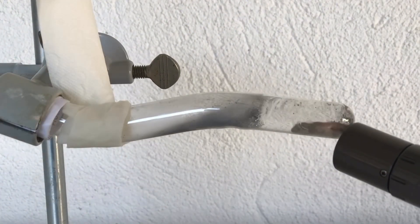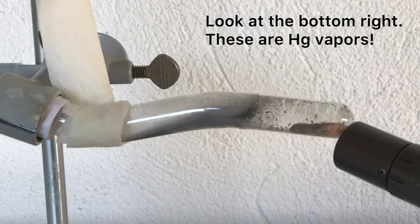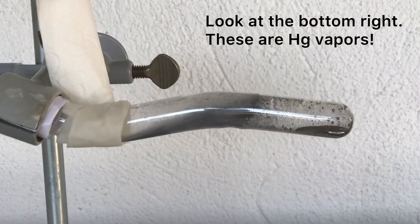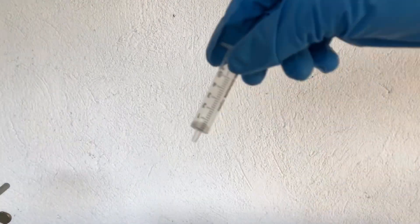The test tube cracked, spilled mercury which was fortunately collected in the tray and a lot of mercury vapors were released. Without the appropriate safety measurements this would have been a huge disaster but fortunately no mercury was spilled anywhere and I wore the gas mask so I avoided inhaling any vapors.